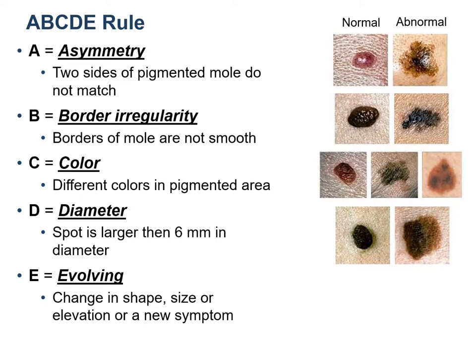In the ABCDE rule, A stands for asymmetry. The figure on the right side of the slide shows what a normal mole should look like on the left panel, while the right panel shows how an abnormal mole looks, which could lead to cancer. A is for asymmetry, meaning the two sides of an abnormal mole do not match. In a normal mole it should be symmetrical, but in an abnormal one it is asymmetrical.